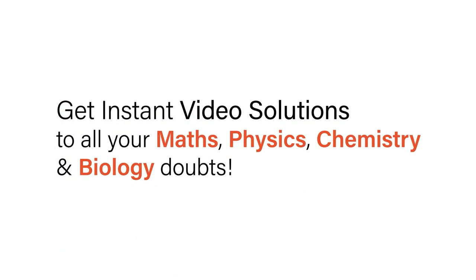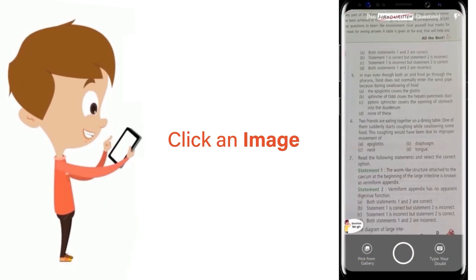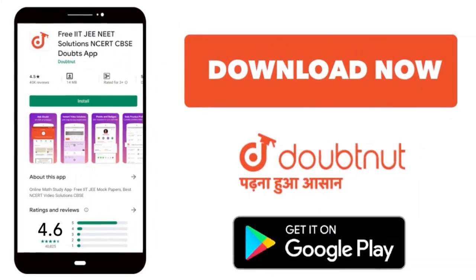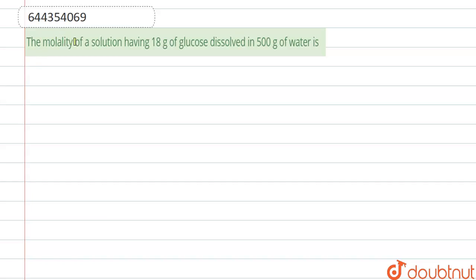With DoubtNet, get instant video solutions to all your math, physics, chemistry, and biology doubts. Just click the image of the question, crop it, and get instant video solution. Download DoubtNet app today. Hello everyone, here the question is: the molality of a solution having 18 grams of glucose dissolved in 500 grams of water. So we have to calculate molality.